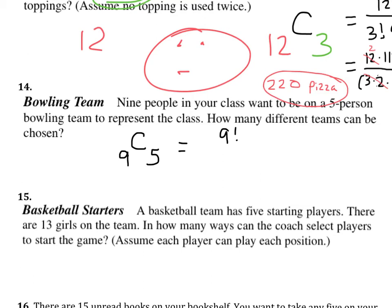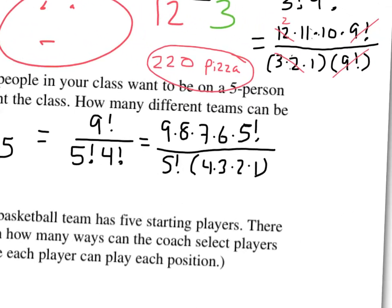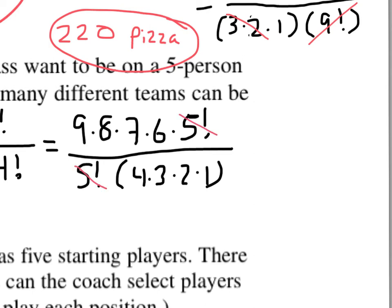So, nine factorial over five factorial times four factorial. If you broke it up, nine times eight, or expanded, excuse me, seven times six times five factorial, all over five factorial and then four times three times two times one. Now, let's go ahead and reduce. Five factorial drops out. Three times two is six. That drops out. The four and the eight reduce. And what I notice downstairs is all a one, and up here is a nine times two times seven. That's it. Fourteen times nine. Which will give me 126 possible teams.